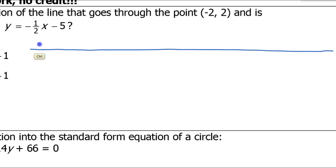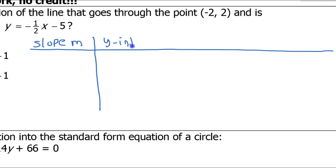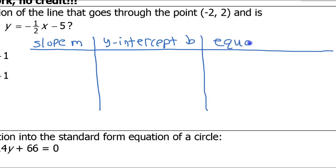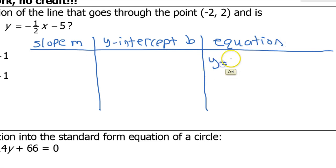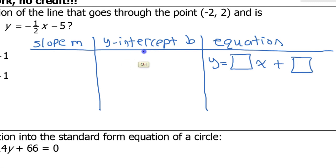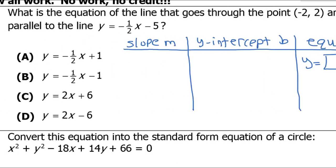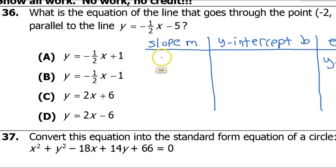In the first column I do slope, the second column I do the y-intercept b, and in the third column I write the equation. The equation is always of the form y equals something times x plus something, where the first box is the slope and the second box is the y-intercept.